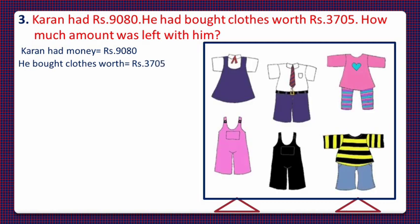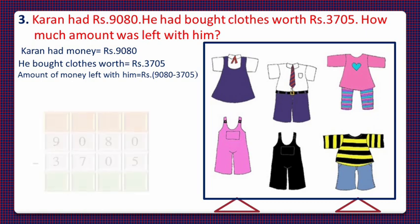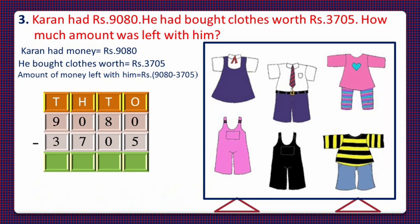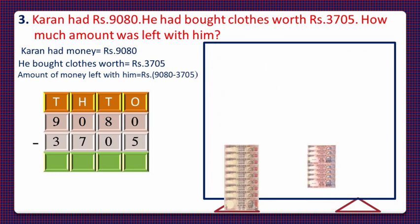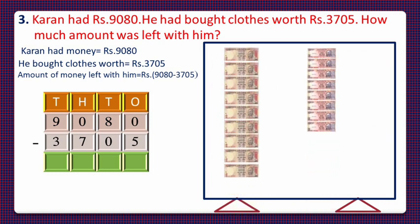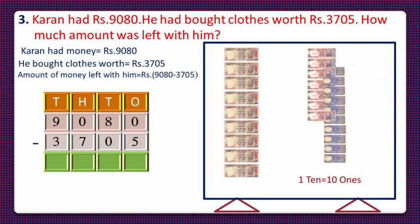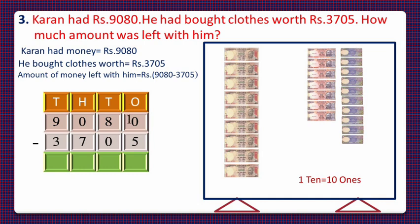We have to calculate the amount of money left with him, so we will subtract 3705 from 9080. Let's take the currency notes of 9080. First he had to give 5 rupees to the shopkeeper and he had 0 one-rupee notes, so he will take 10 one-rupee notes instead of 1 ten-rupee note, as 1 ten is equal to 10 ones. So now 10 ones are there and number of tens reduced from 8 to 7.